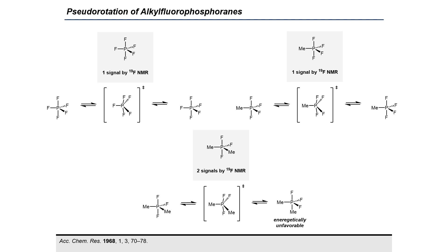Pseudorotation has also been studied with alkyl fluorophosphoranes. Analysis has confirmed that PF5 exists as a trigonal bipyramid with three equatorial and two apical fluorine substituents, yet only one fluorine signal can be observed by fluorine NMR, explainable by rapid pseudorotation in which the fluorine atoms are equilibrating. One fluorine signal is also observed when tetrafluoromethylphosphane is analyzed by fluorine NMR for the same reason. However, two fluorine signals are observed for trifluorodimethylphosphane, meaning those fluorines do not rapidly equilibrate. It has been proposed that pseudorotation is inhibited in this molecule due to the strong energetic preference for the more electronegative, apicophilic fluorines to occupy the apical positions, since pseudorotation would force one methyl group into the apical position, which is energetically unfavorable.